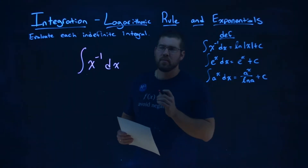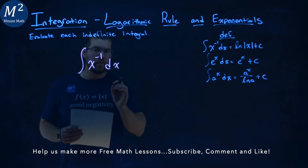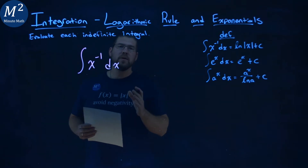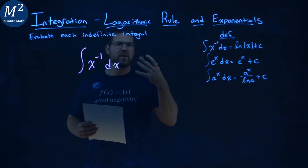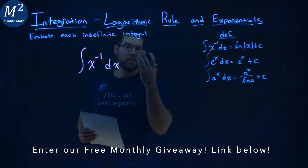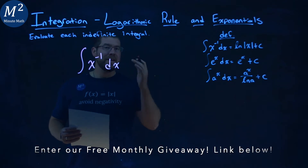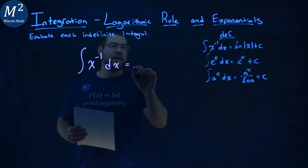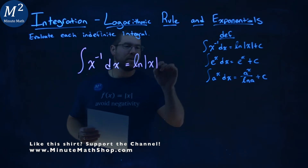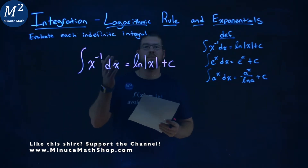We're given this problem right here. We need to evaluate this indefinite integral of x to the negative 1 power. We have a definition for this integral. Our definition tells us that this integral is equal to the natural log of the absolute value of x plus c. This is a pretty simple one.